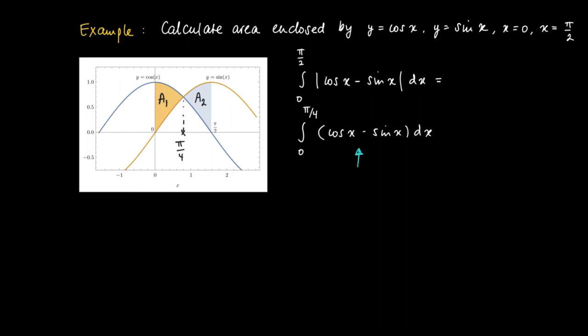And for A2, we calculate the integral pi over 4 to pi over 2 over the sine of x minus the cosine of x dx.